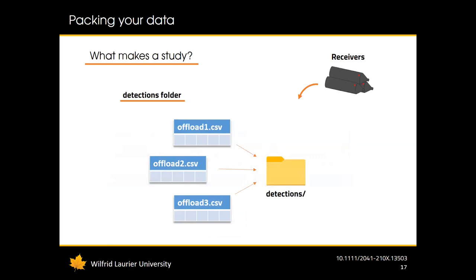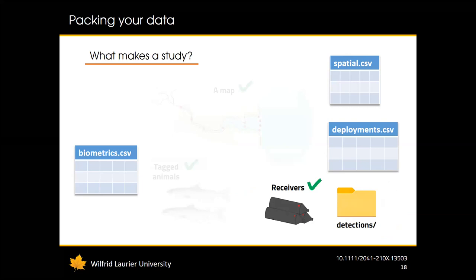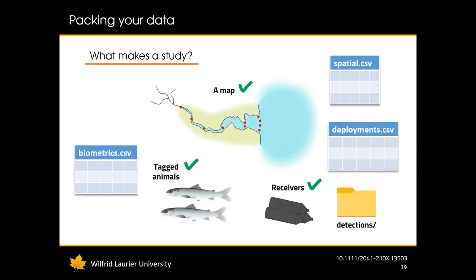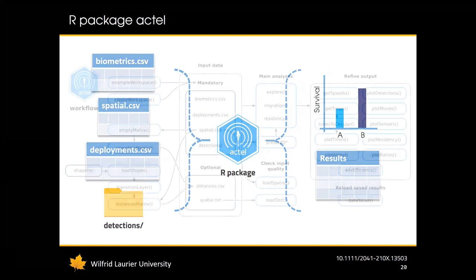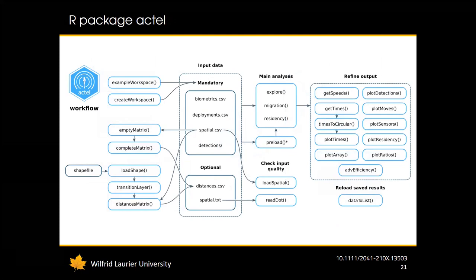The actual offloaded detection files are best placed into a detections folder. Unless you know your way around Excel, do not open them, because Excel is very prone to destroying the formatting of these files and then actel won't be able to read them. So with three tables and one folder we can condense all the information from our study. This is where actel comes in — it grabs this packed data and turns it into results and graphics.